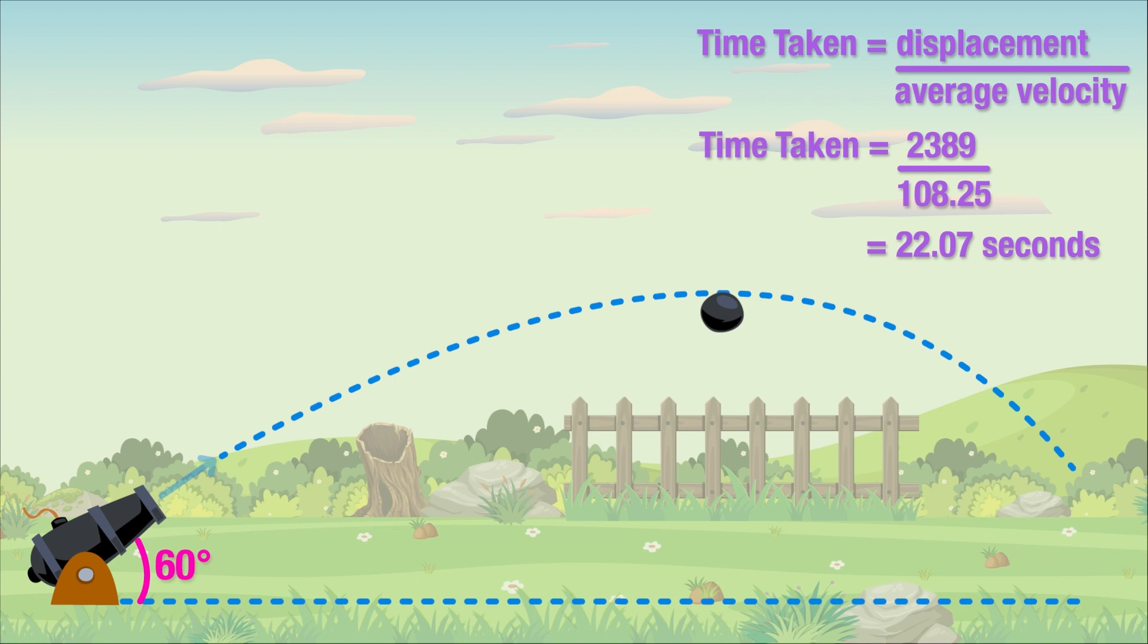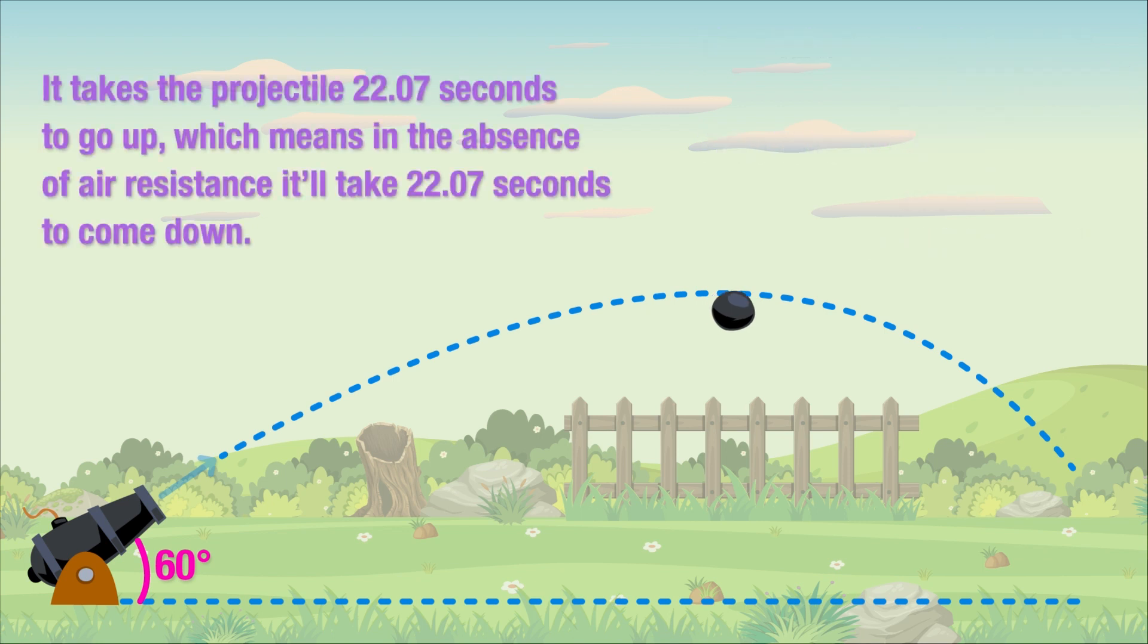So if the projectile took 22.07 seconds to go up and reach the highest point, it'll take the same time to come back down again, which means that the projectile is going to be airborne for a total of 22.07 plus 22.07 seconds, which is 44.14 seconds.